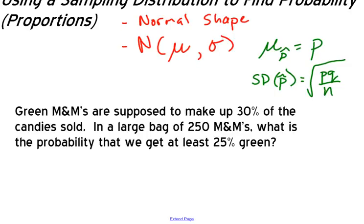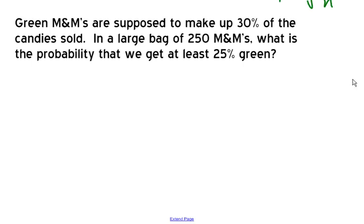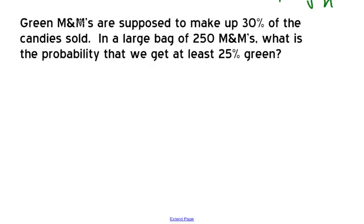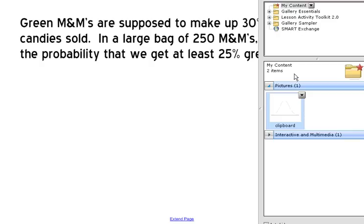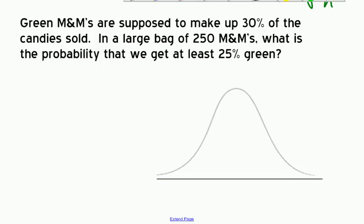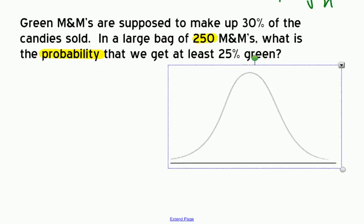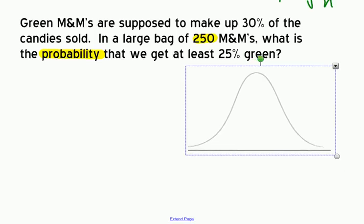Let's look at this example. Green M&Ms are supposed to make up 30% of the candy sold. In a large bag of 250 M&Ms, what is the probability that we get at least 25% green? Since I'm trying to find a probability about a sample of 250 M&Ms, I'm going to use a sampling distribution. To use it, I need to define the mean and the standard deviation of the distribution.